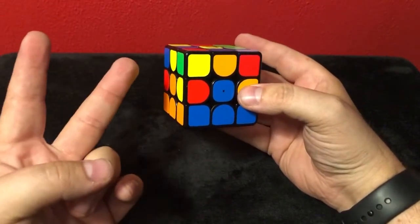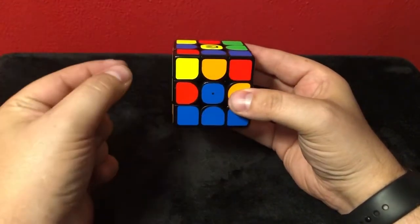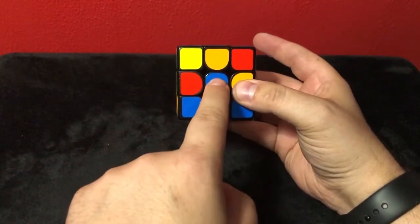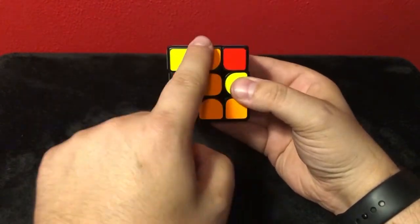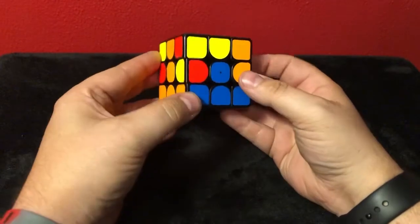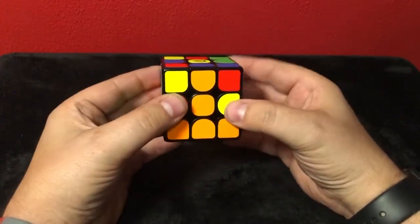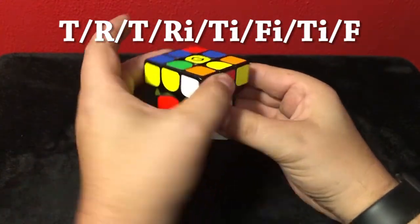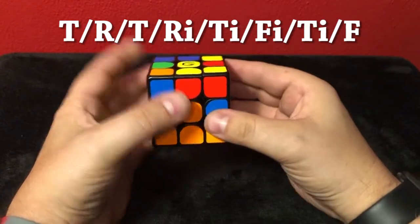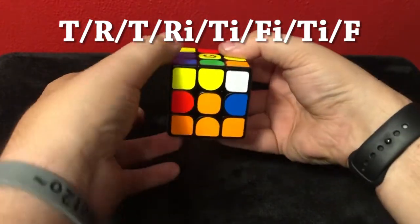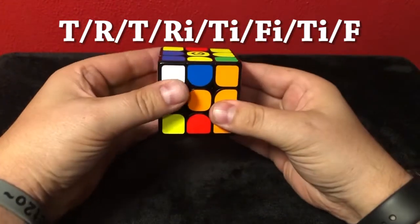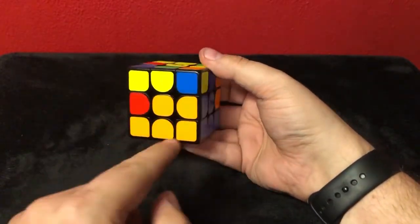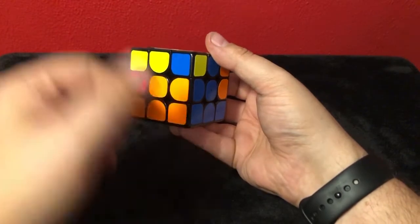So we have two possibilities of algorithms depending on where you want this piece to go. What I do is I line up the color that's here to match the center. So that would be orange. Blue needs to go to the right side. So we're gonna do the right side algorithm which is top, right side, top, right side inverted, top side inverted, front side inverted, top side inverted, and then the front side has to go normal, and boom! There he is. In the right spot.